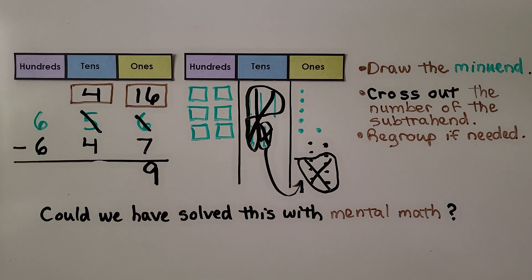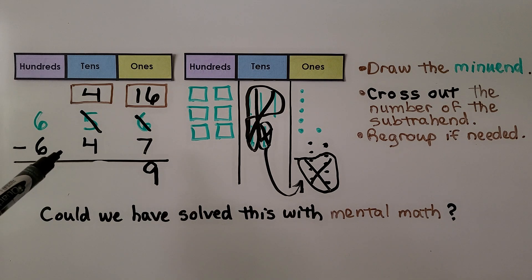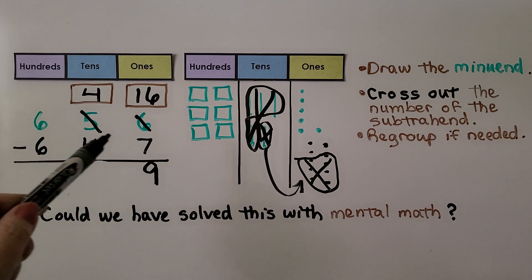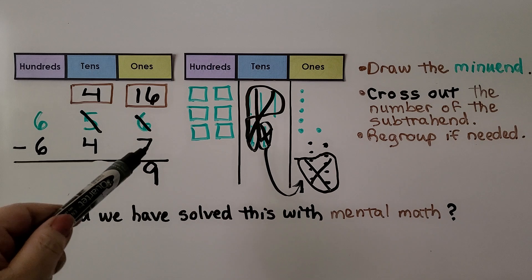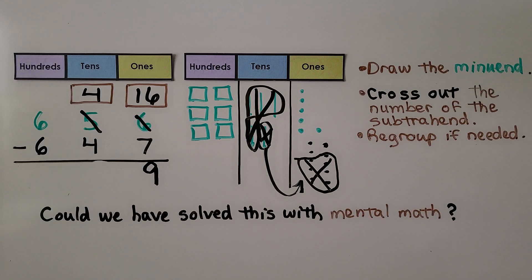Now, could we have solved this with mental math? Yes — we could have started at 647, counted on three to 650, then counted on six more to 656, and that would have been nine.